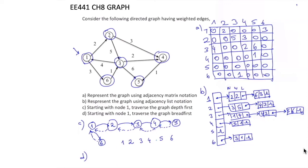For Part D, breadth-first traversal: we start with node 1, mark it as visited, insert it into the queue and dequeue it. Then we insert nodes 2 and 6 into the queue, because they are the nodes directly reachable from node 1. So after node 1, we visit 2 and 6. We cannot go to node 3 directly because there is no connection from node 1 to 3.